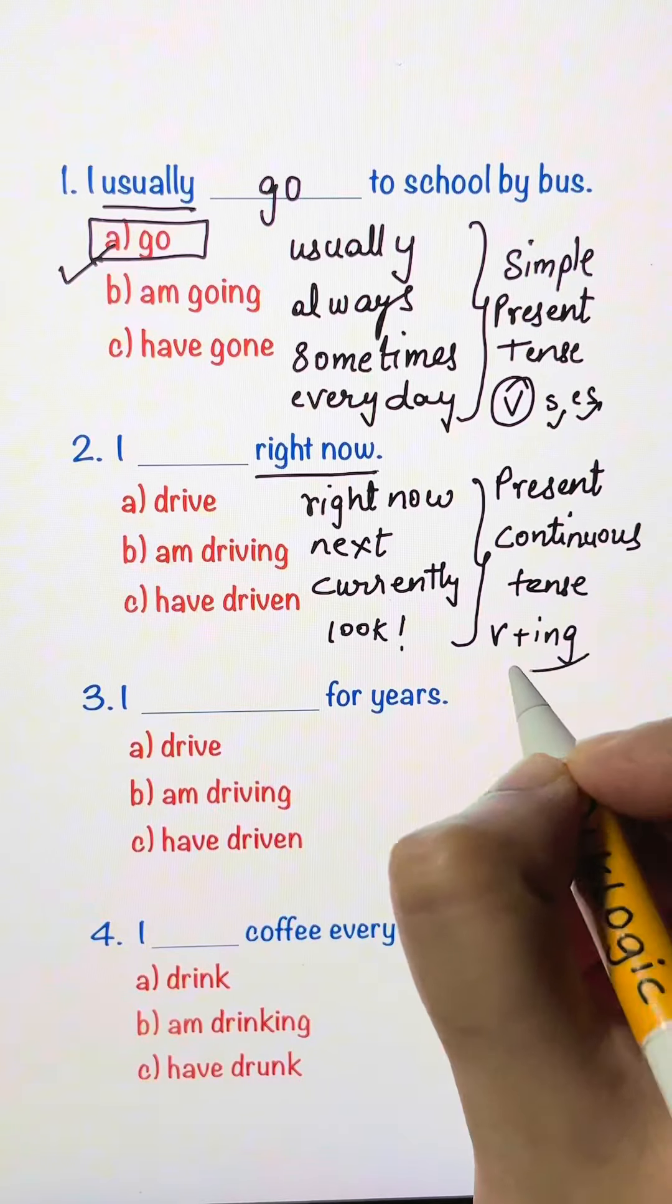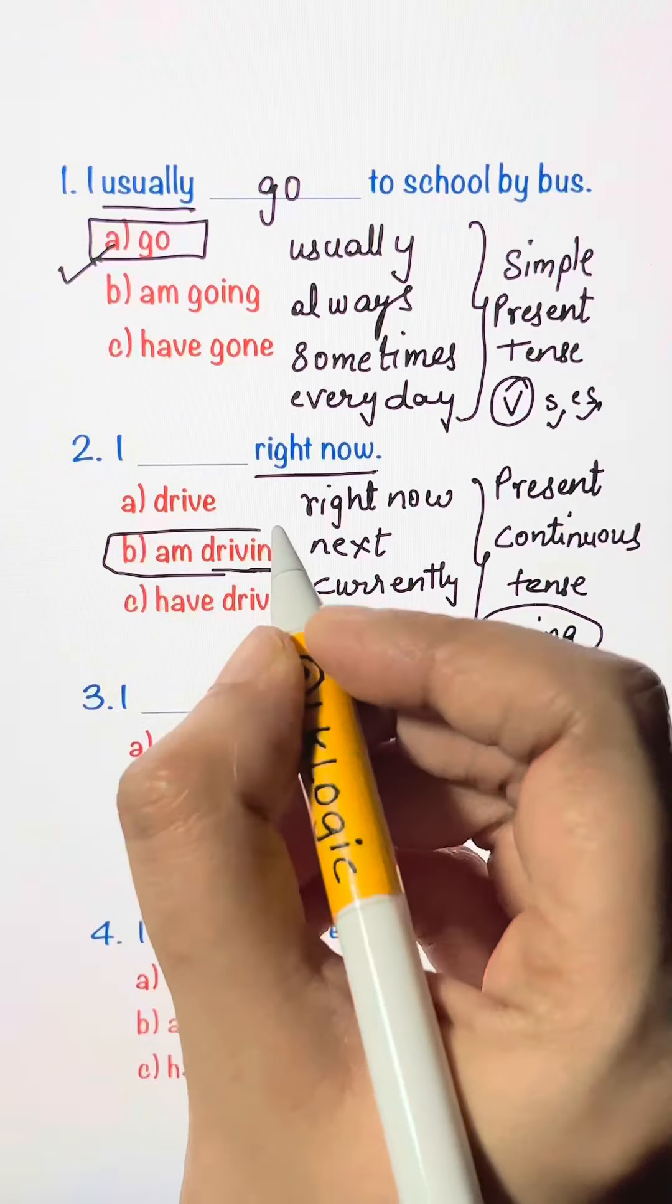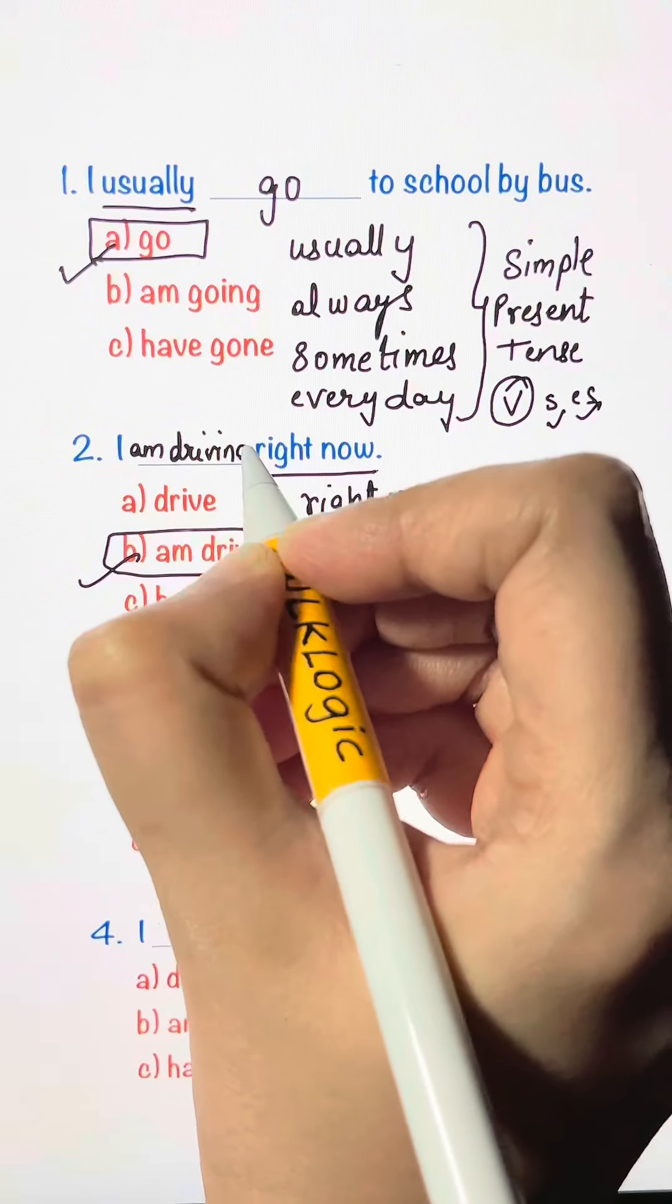That is verb plus ing. So here we have drive with ing. So that's your right answer. I am driving right now.